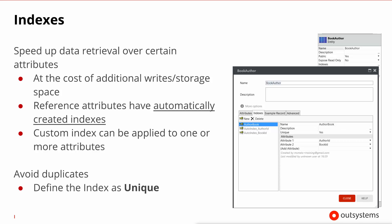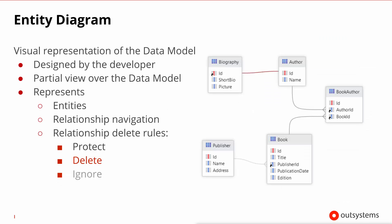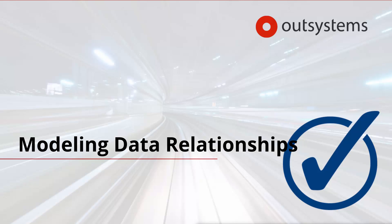It's useful to have a visual representation of your data model, and this is where the entity diagram comes in. Inside Service Studio, you can create as many entity diagrams as you want and by dragging and dropping your entities into it, you get a visual representation of the relationships between entities. In this screenshot we can see the book-related data model and all its entity relationships, which are color-coded: strong gray for protect delete rules, red for delete delete rules, and light gray for ignore delete rules. And that's it for Modeling Data Relationships in OutSystems — see you on the next lesson.